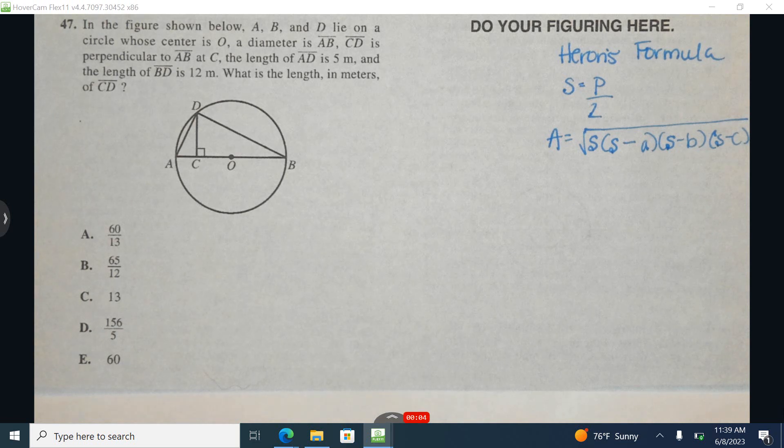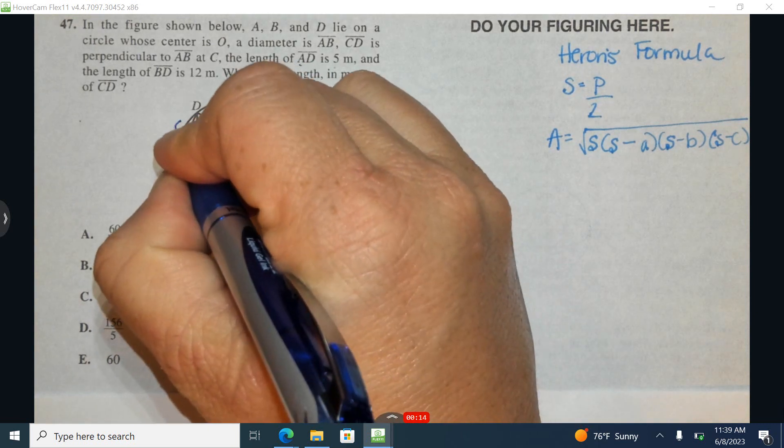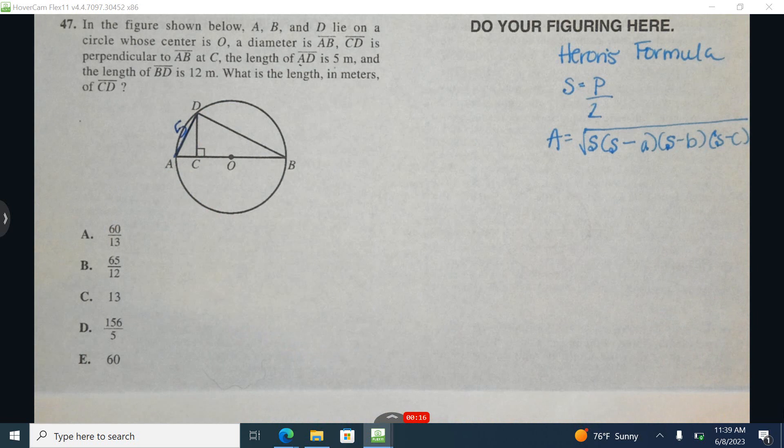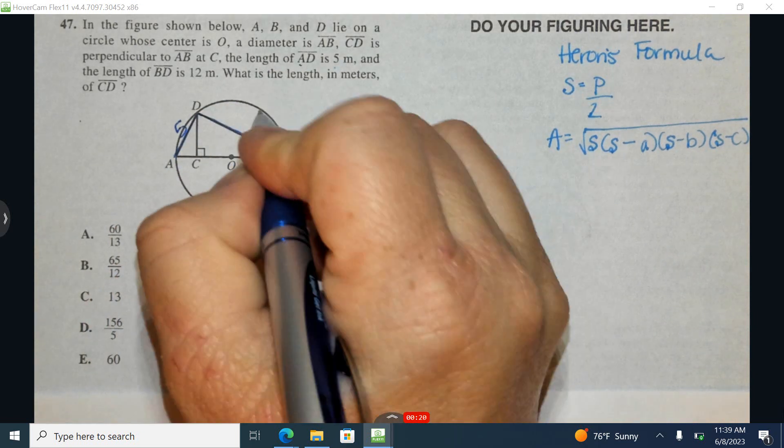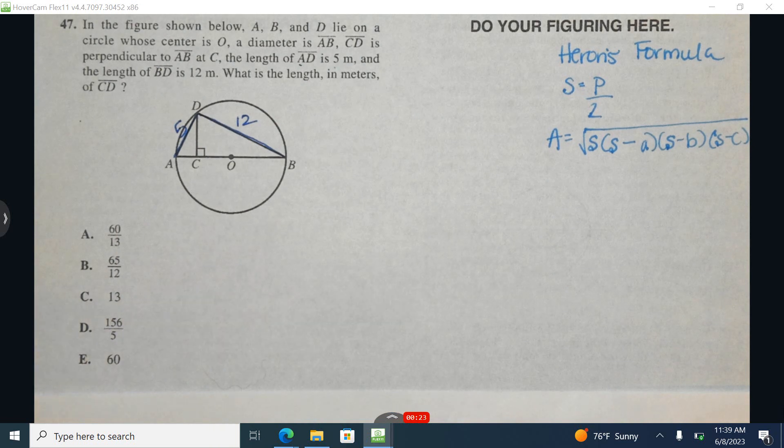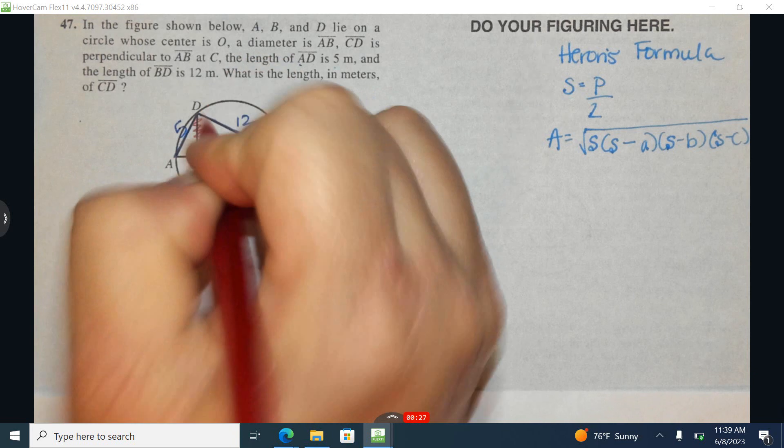The first thing I would suggest here is we have a diagram, but it appears like not all the information from above has been inserted into the diagram. So I'm going to go through and add in what I know. I know AD is 5, this length is 5. I know that BD, this length, is 12. And I know my desired length that I want to be able to find out is CD.